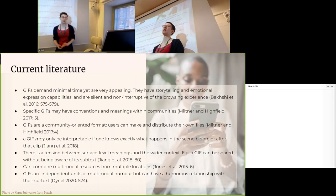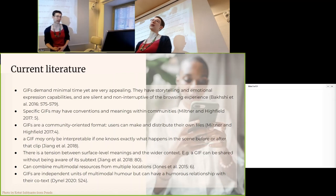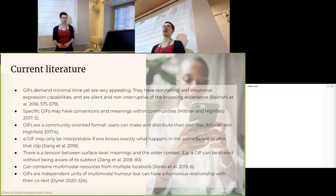Specific GIFs may have conventions and meanings that are specific to communities. They're also a community-oriented format. So users can make and distribute their own files, which is a kind of important component because something like an emoji, to get a new emoji approved, you have to send a formal proposal to the Unicode Consortium and go through an actual process. However, things like GIFs and memes are part of the kind of internet where people can just make stuff on the fly. They're very quick, they're easy, they're accessible.